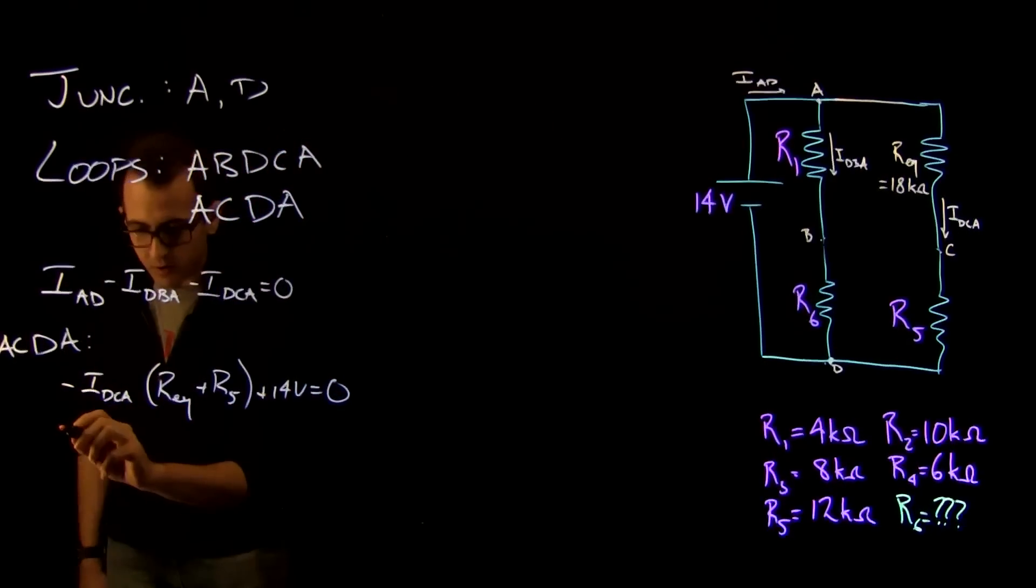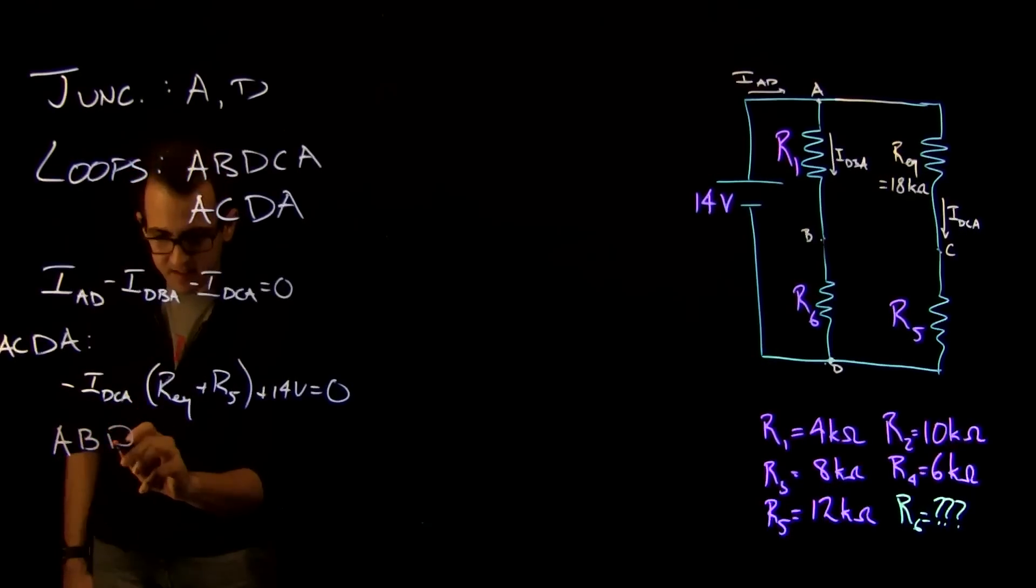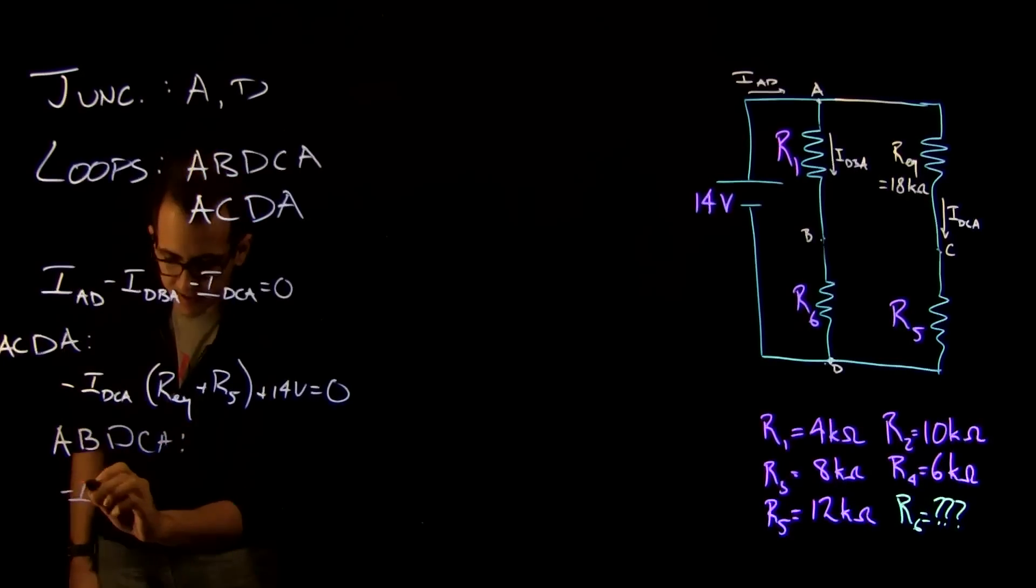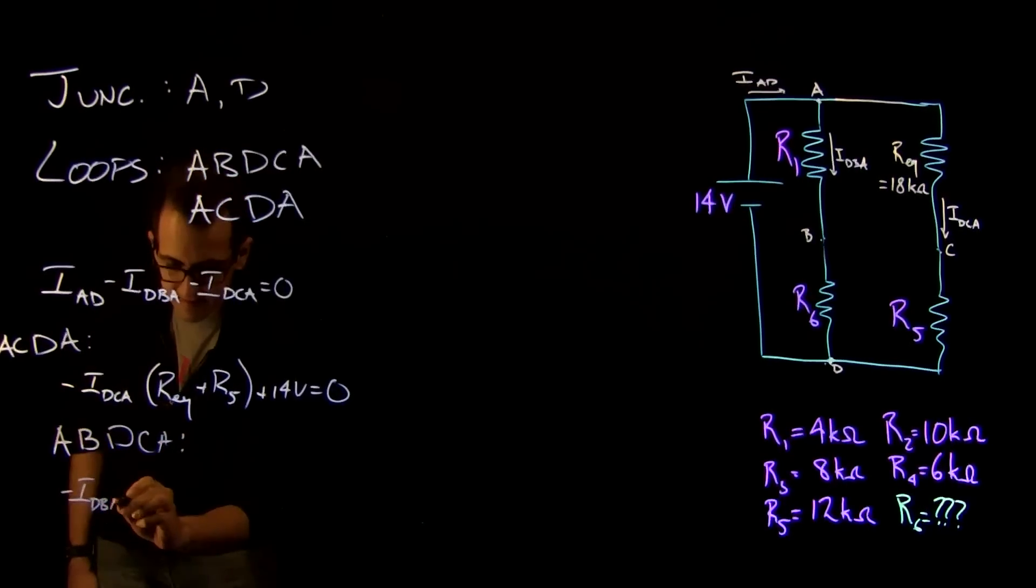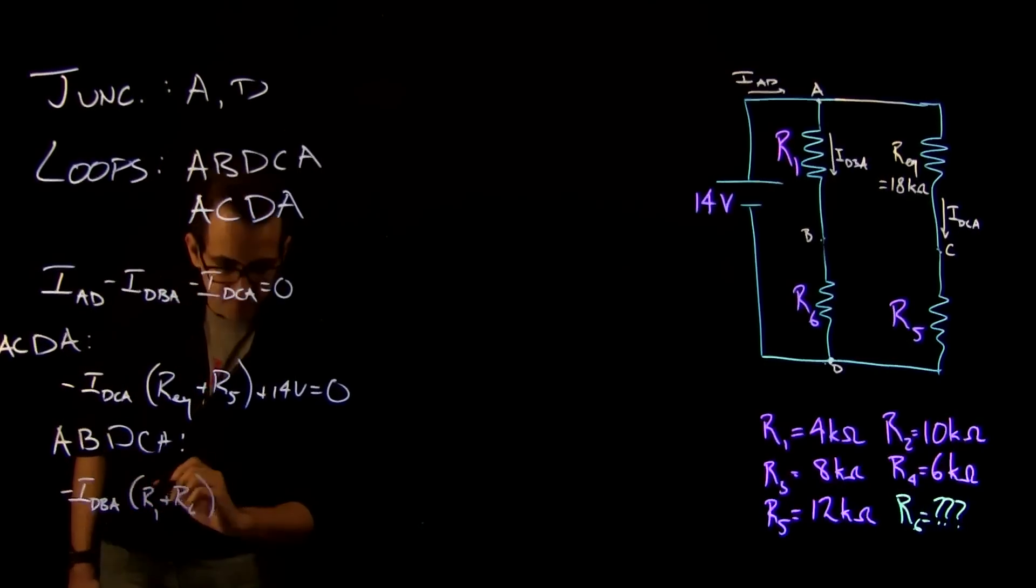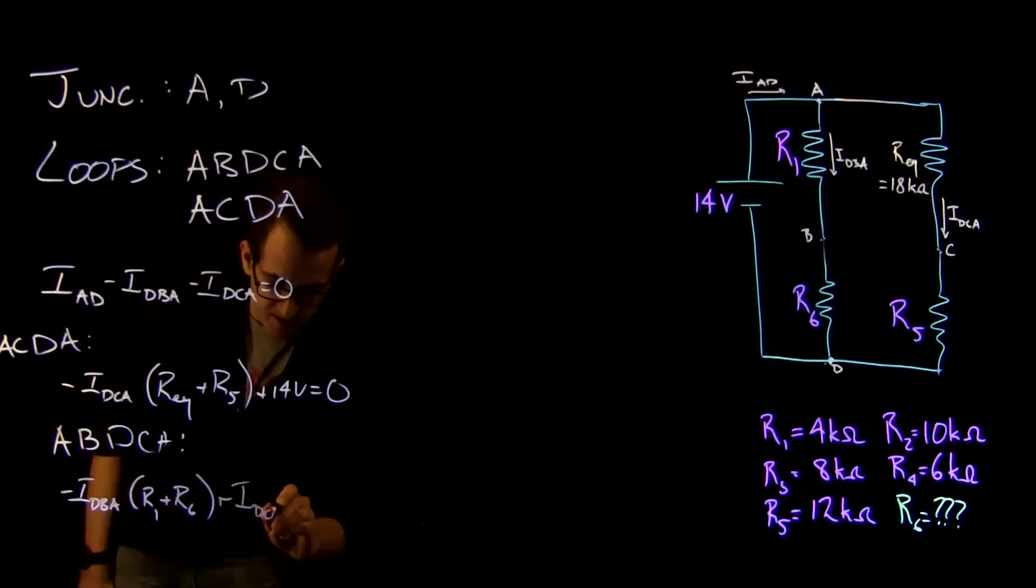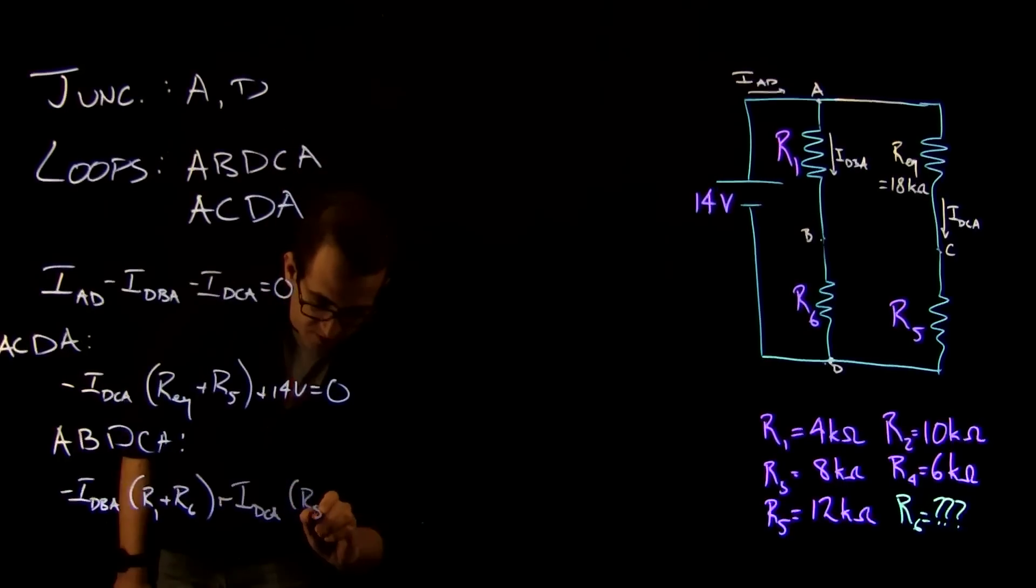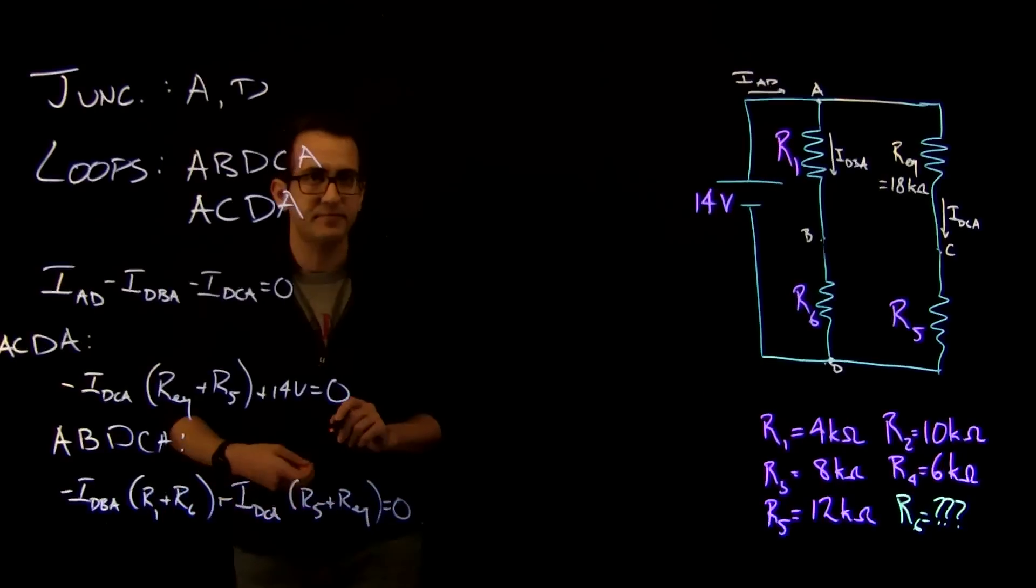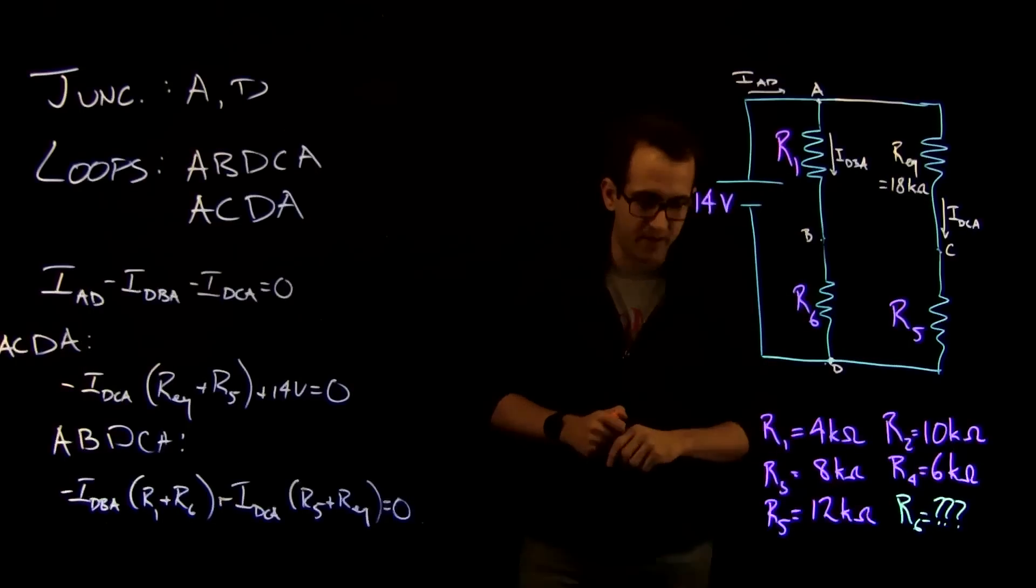The other loop rule we want to use is ABDCA, and we have minus IDBA times R1 plus R6, plus IDCA times R5 plus REQ equals 0. So that's that loop going that way.